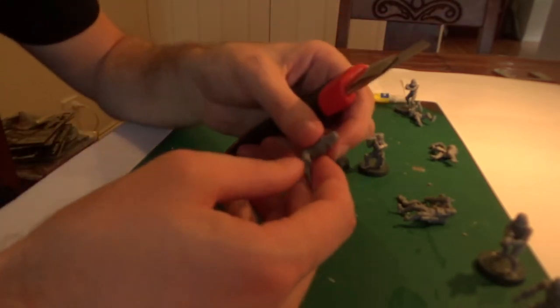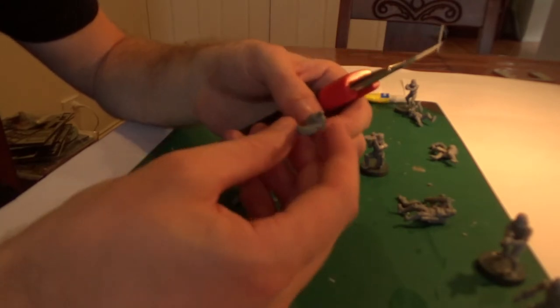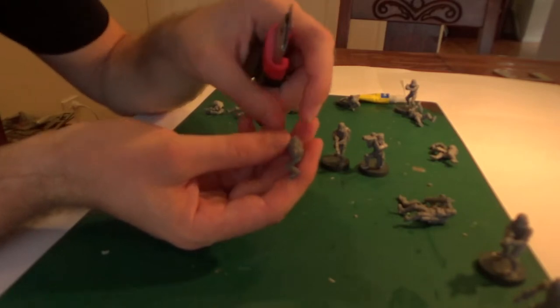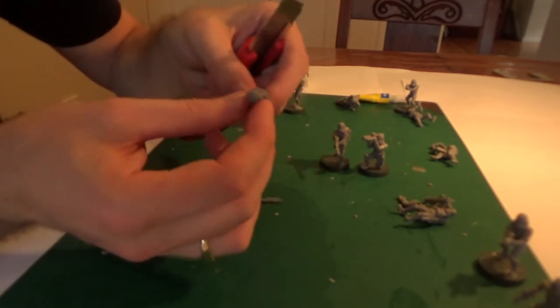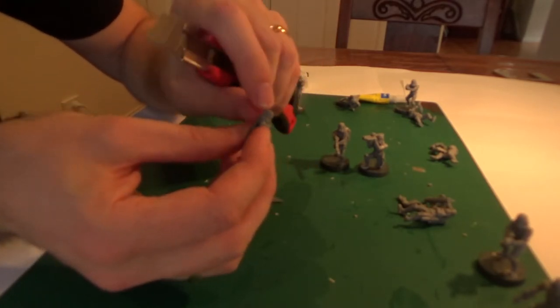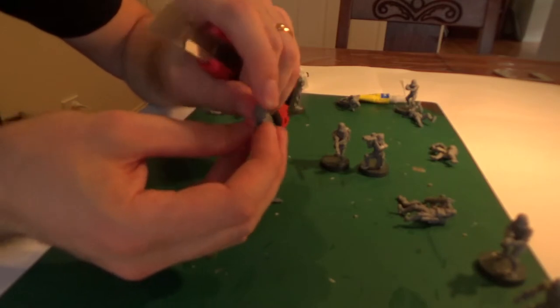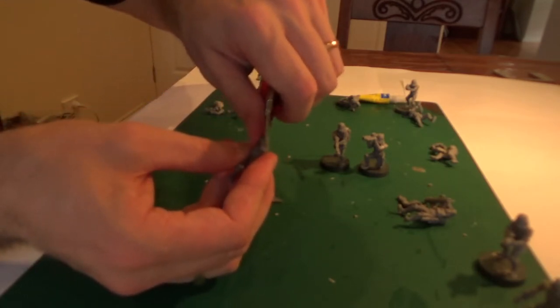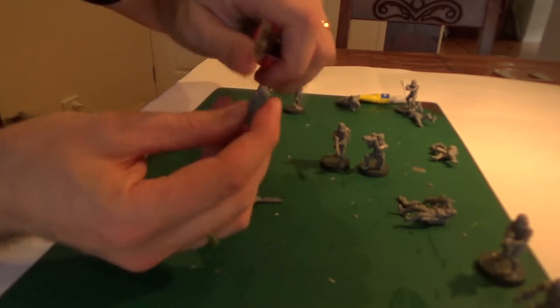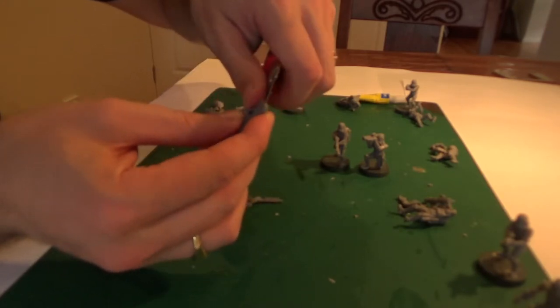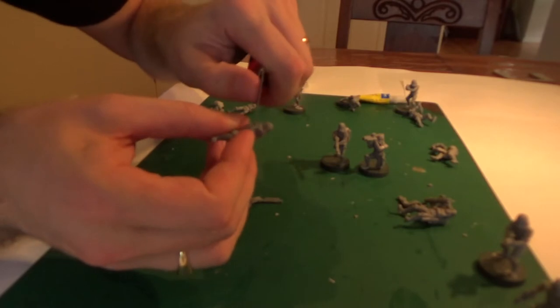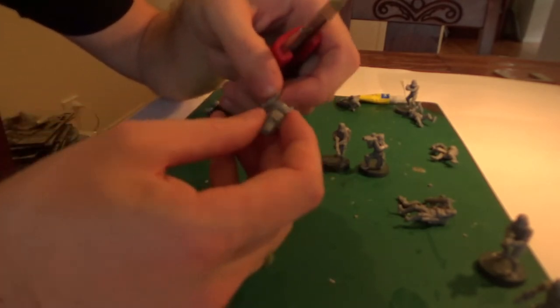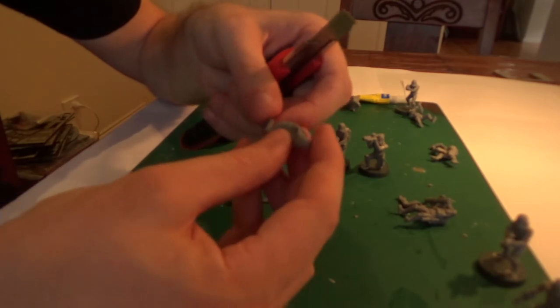Next thing to do is to remove any mold lines. These are small lines left over from the casting process that shouldn't be there. So to get rid of them, it's quite easy. You just get your sharp knife, gently run it over just to remove the mold line. You do that over the whole model. If in doubt, just have a look at the Fantasy Flight Games photos on the internet.